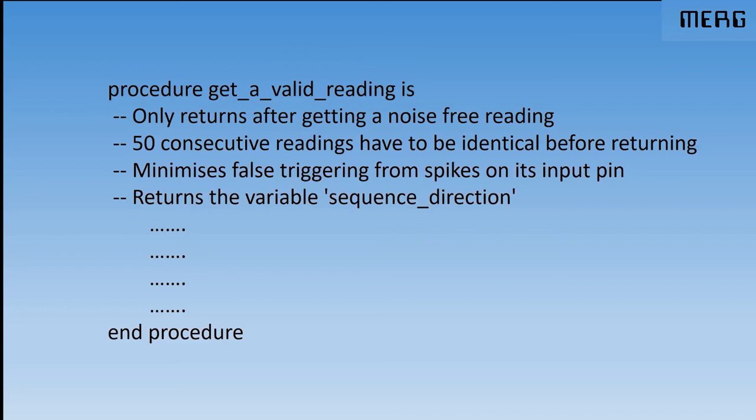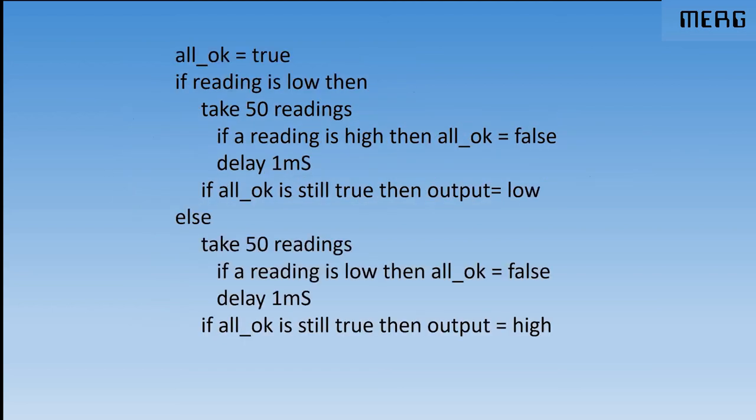So you take 50 readings. And if they're all the same, then OK. So if you've got an additional interference pulse going low and the rest are all high, something's gone wrong. You want to have 50 lows or 50 highs before you treat it as a high or low. And that stops any false triggering and returns something that's useful. So there's pseudo code for it. And that's not the actual JAL code or the Arduino code.